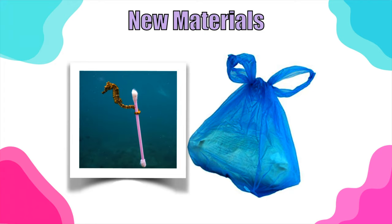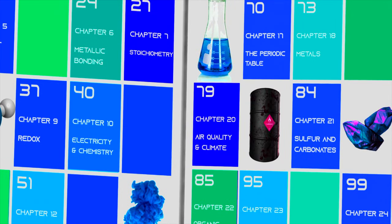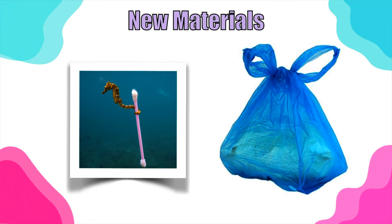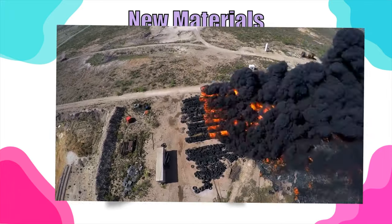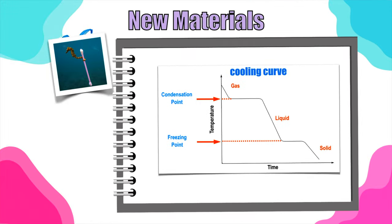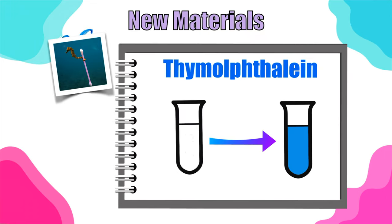As for the new additions to the 2023 chemistry syllabus: there is the new chapter called 'Air Quality and Climate.' They've also introduced a new topic called plastics, covering the harmful effects of polymers and plastics — like animals getting trapped or the burning of plastic and its harmful effects on the environment. Other additions include the cooling curve, now officially part of the syllabus, where we learn about changes of state while cooling a substance from gas all the way to solid. A new indicator, thymol blue, has also been added — it changes from clear in neutral or acidic conditions to blue in alkaline conditions.